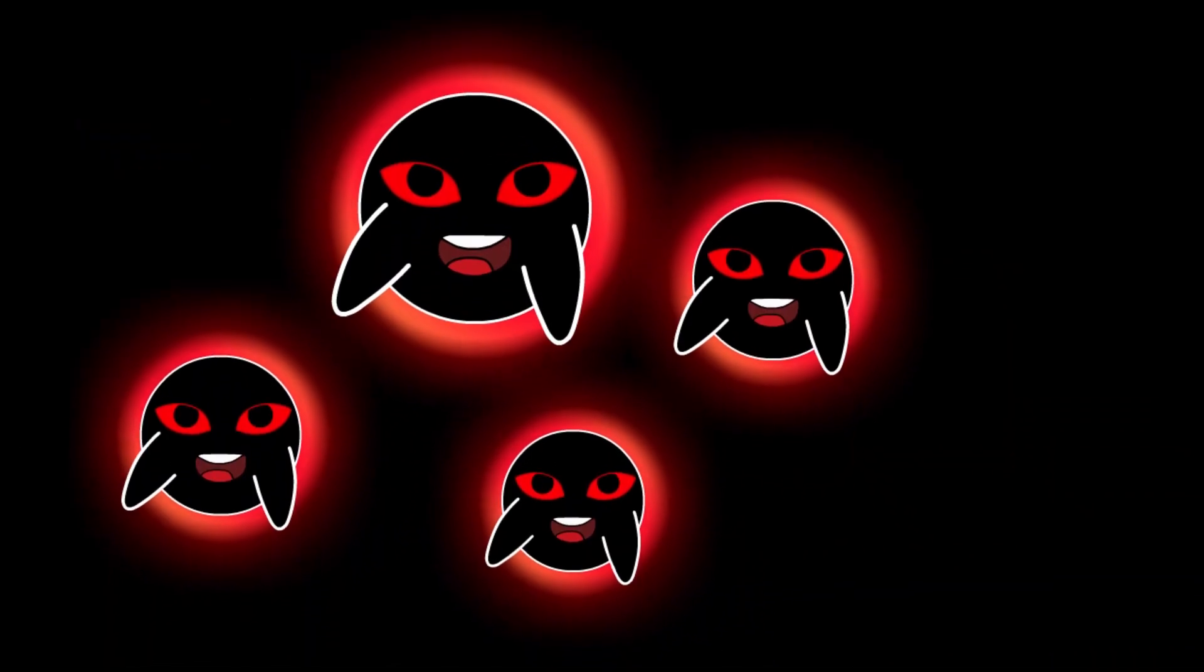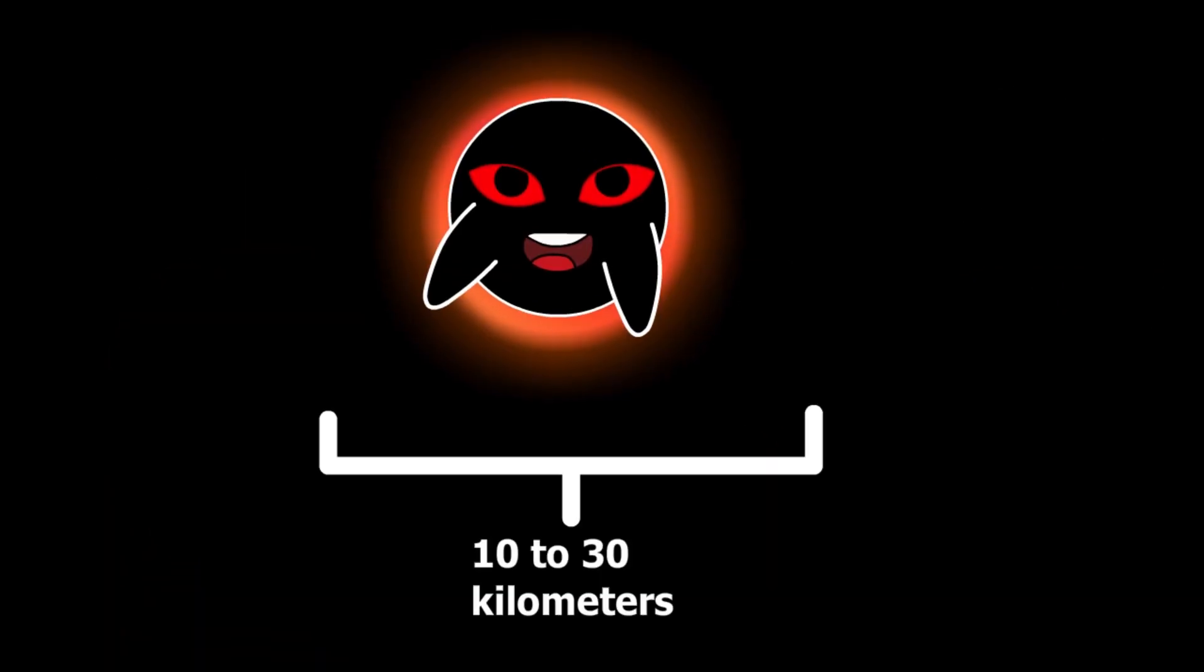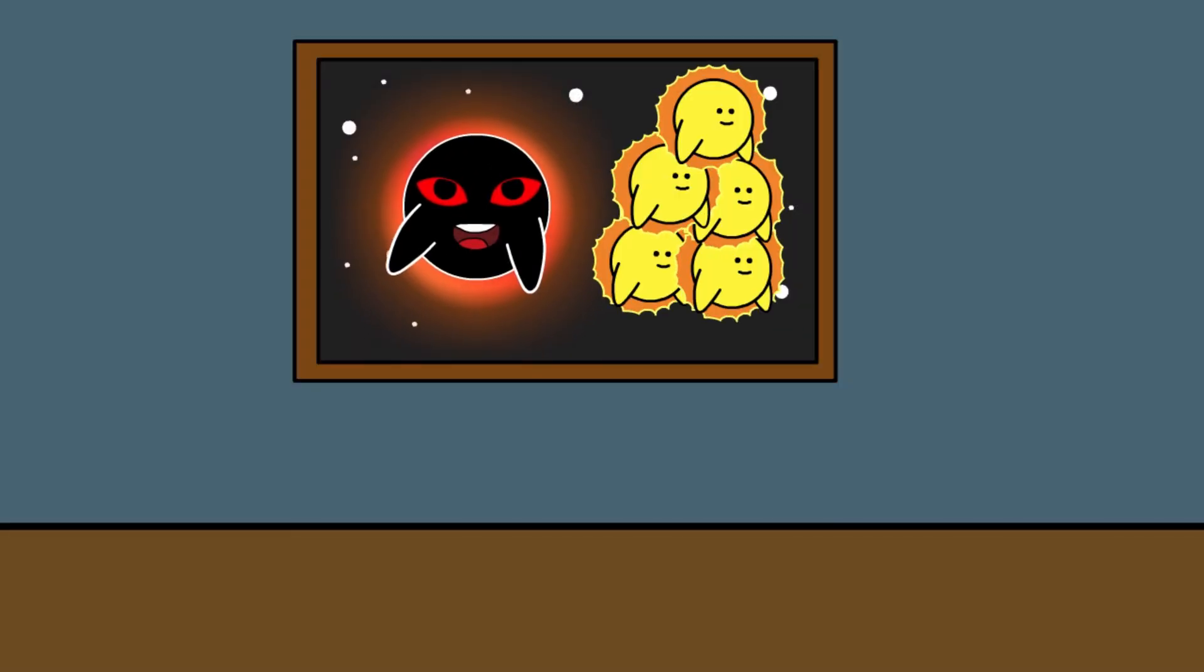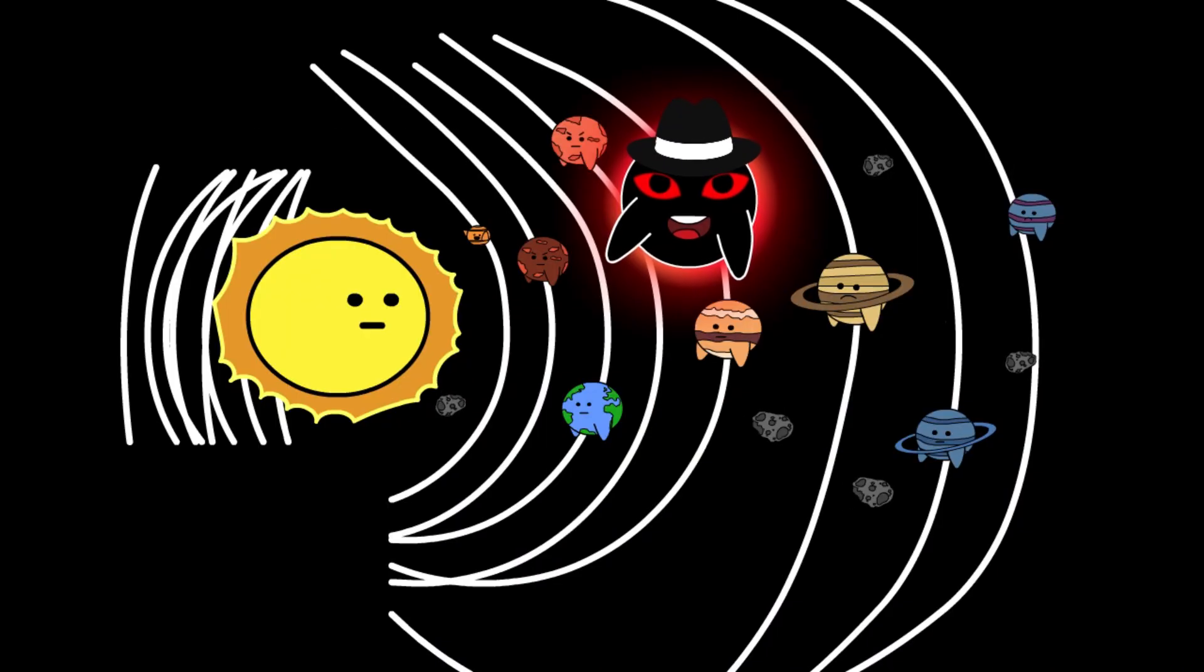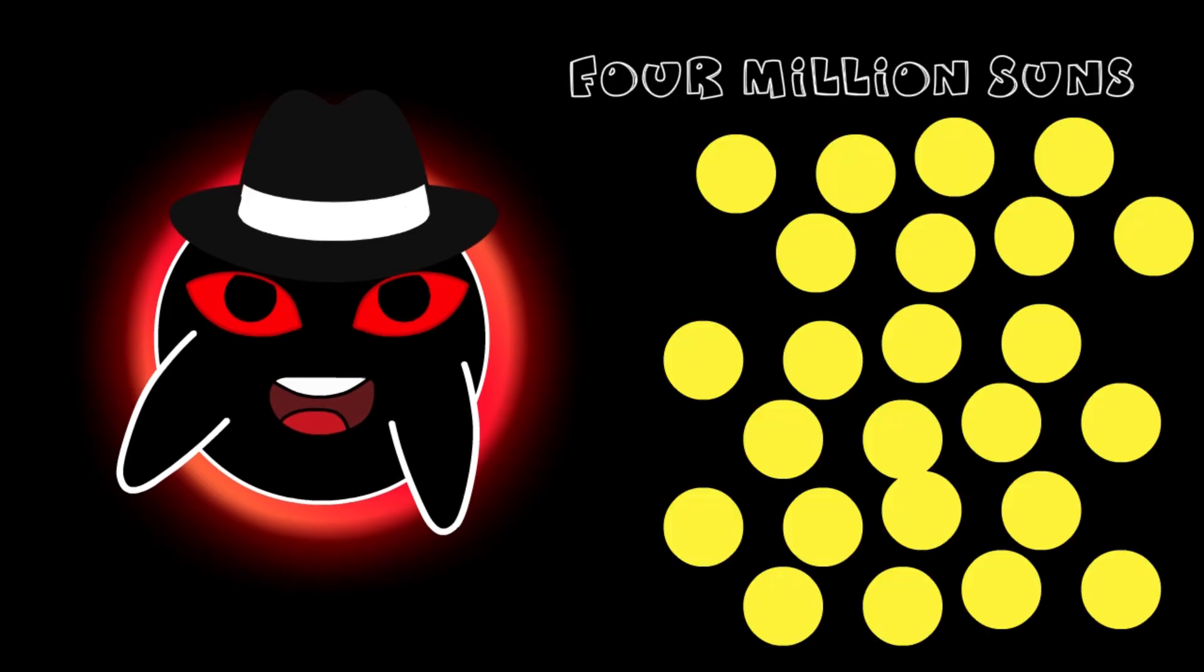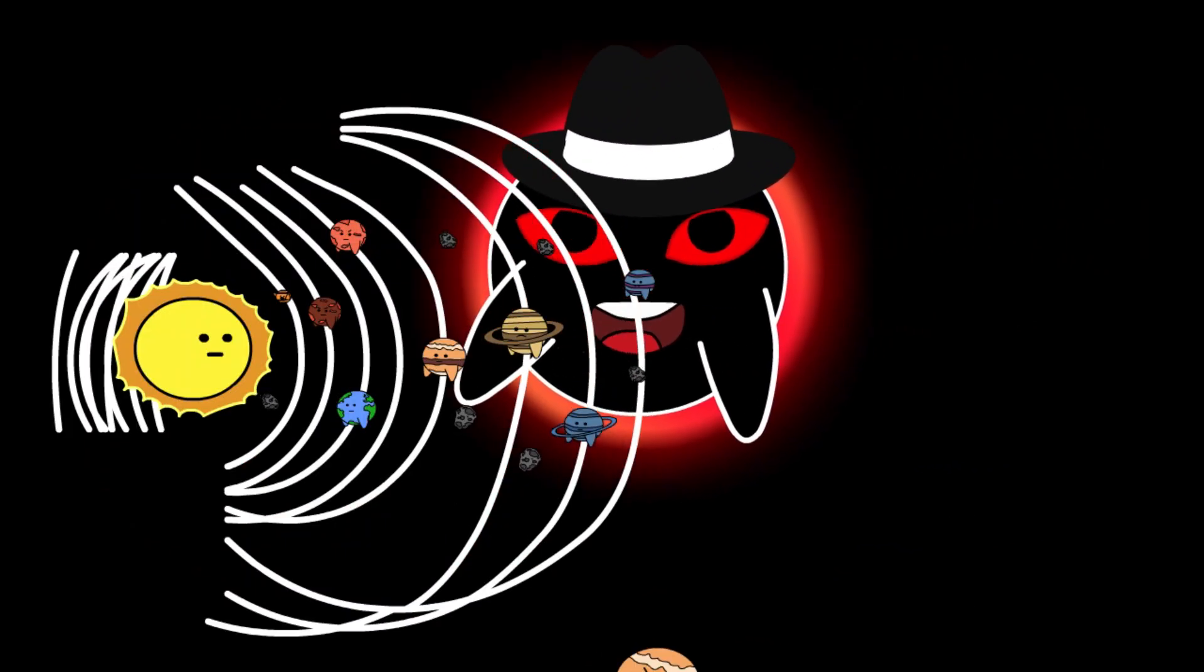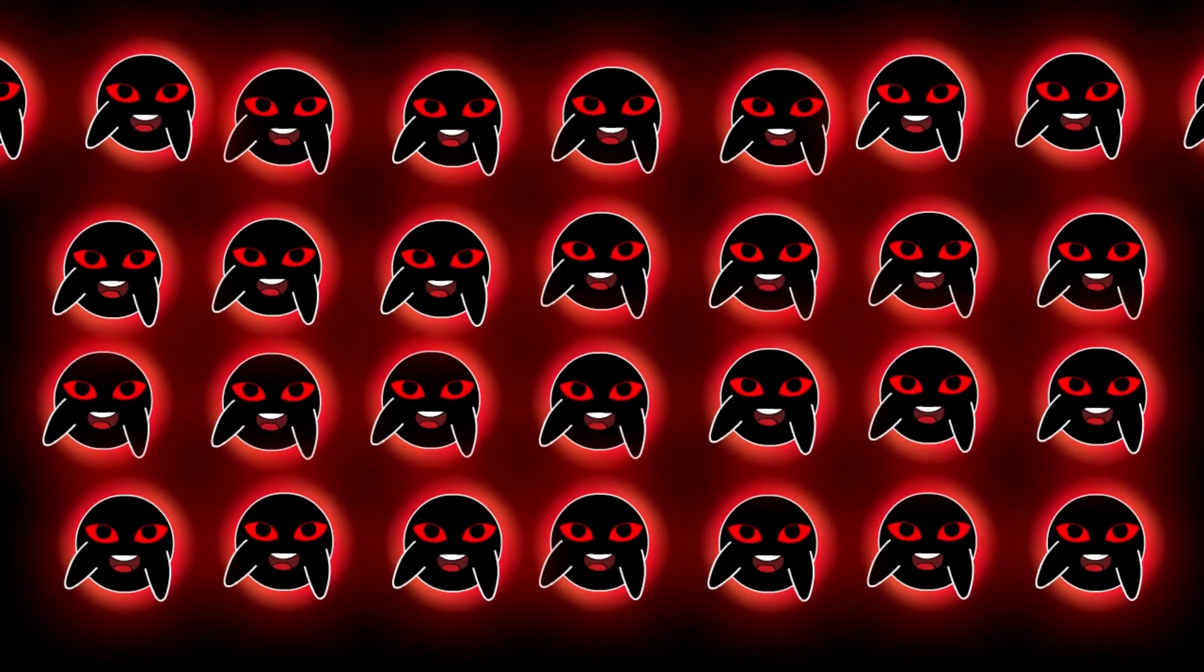They come in all sizes. The smallest ones, stellar black holes, can be around 10 to 30 kilometers across—tiny, yet each one heavier than several suns combined. The biggest ones are called supermassive black holes. These monsters sit at the centers of galaxies, like Sagittarius A*, the one in our Milky Way. It's as massive as 4 million suns and wide enough to swallow our entire solar system whole.